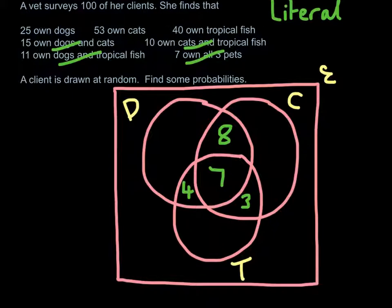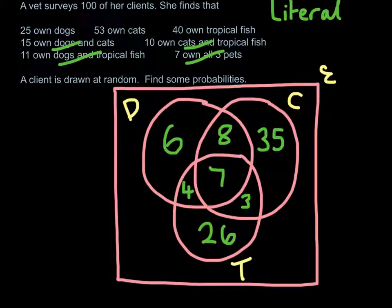So 40 own tropical fish. That entire circle has to add up to 40. So if we do four plus seven plus three, work that out, take it away from 40, and we get 26. So if we go back to cats, we know that circle there, all in all, is going to have to add up to 53. So, eight plus seven plus three, and then take that away from 53, which is 35. And then we can finish off then with the dogs. So I'll add up eight, seven, and four, take it away from 25, and we'll get six.